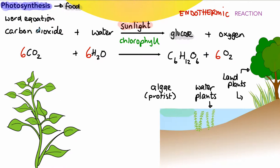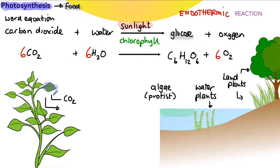It's worth briefly looking at how the leaf gets what it needs for photosynthesis. Carbon dioxide comes in from the air — or from the surrounding water if it's a water plant — and oxygen leaves the leaf into the air. Both of those happen by a process called diffusion: CO₂ diffuses in when photosynthesis is happening, and oxygen diffuses out.